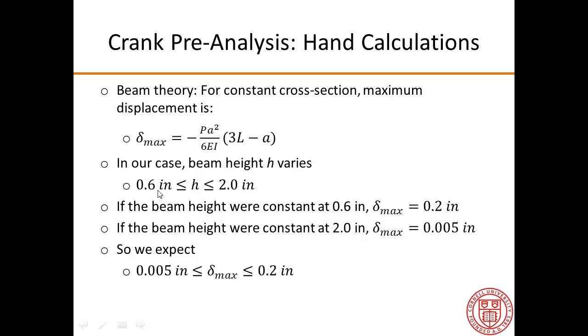So now, we can see that, okay, if the beam height were constant at this value, we can calculate what the maximum displacement is. And similarly, if the beam height were constant at this value, we can predict what the maximum displacement is from this equation. So this is for a thinner beam than we have, and this is for a thicker beam than we have. So our own maximum displacement from ANSYS, we expect to lie within this range.